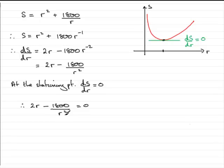Where do we go from here? Well what I'd want to do is get rid of this r squared and I'm going to times both sides by r squared. So we times this term by r squared and we get 2r cubed. Multiply this term by r squared and you end up with minus 1800. And times 0 by r squared and you get 0.